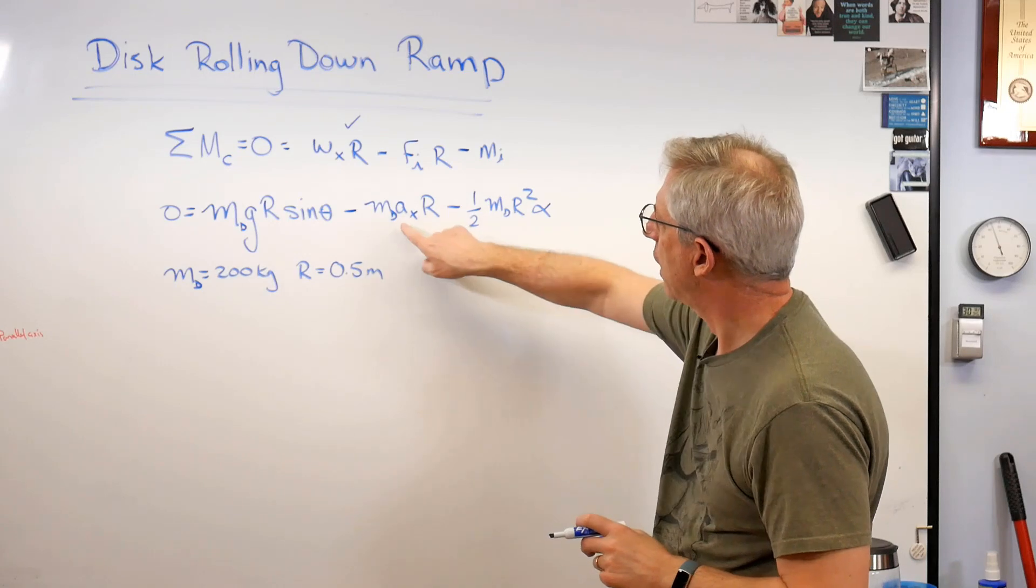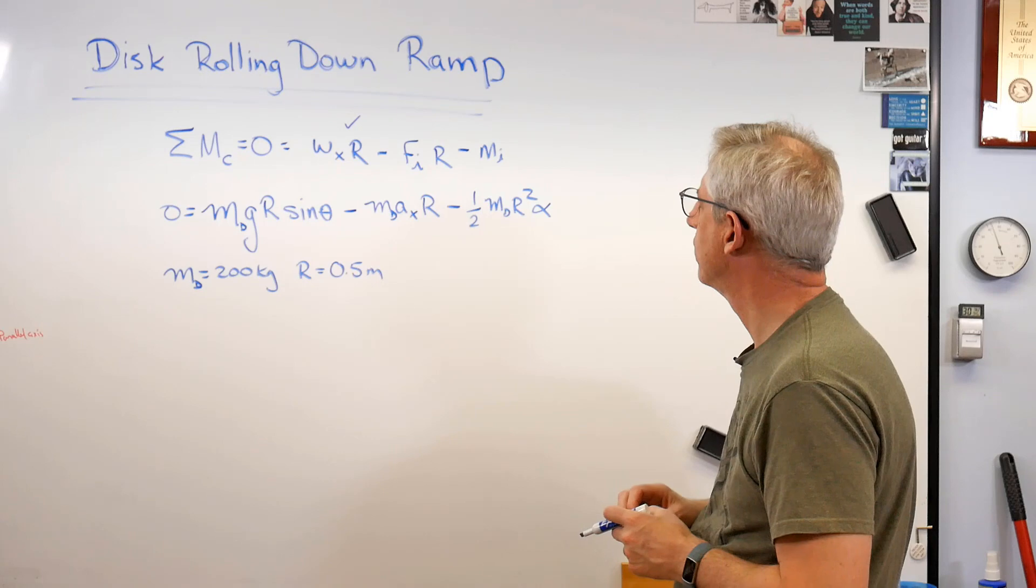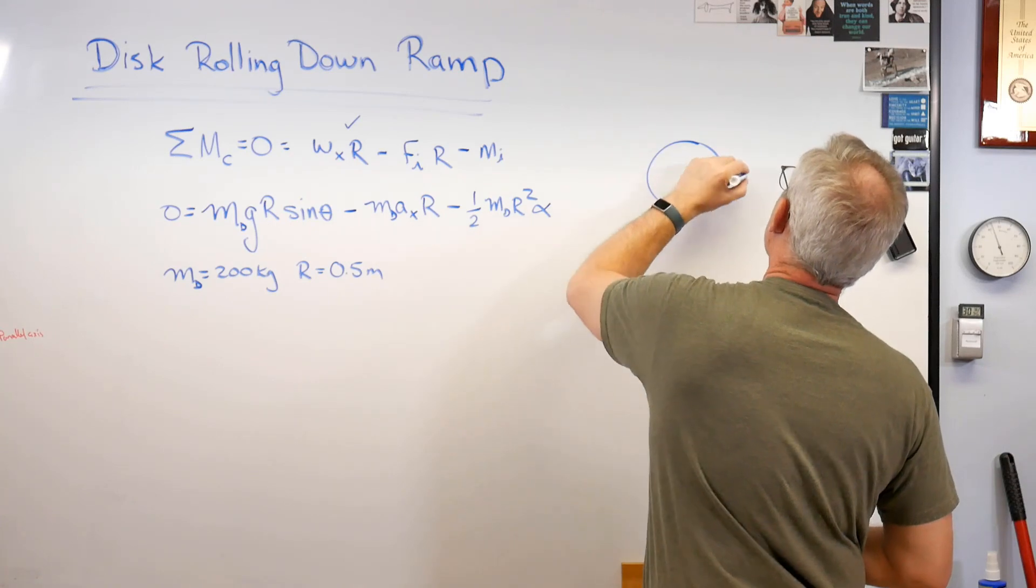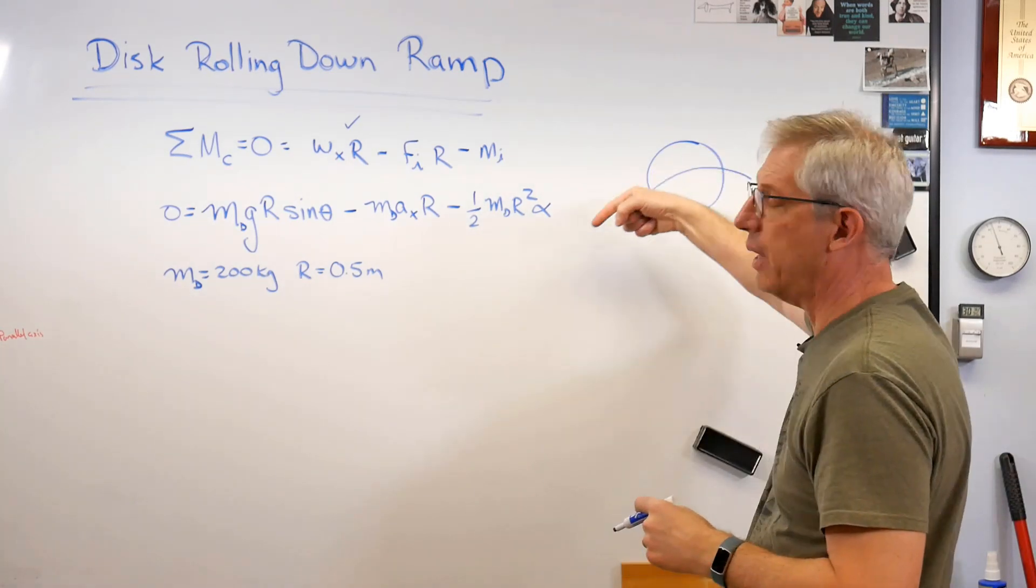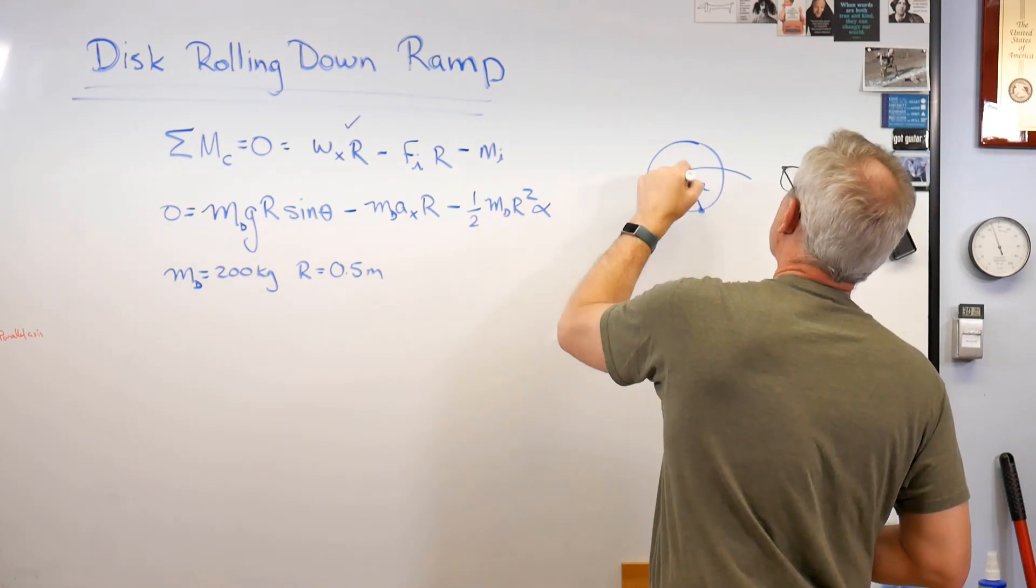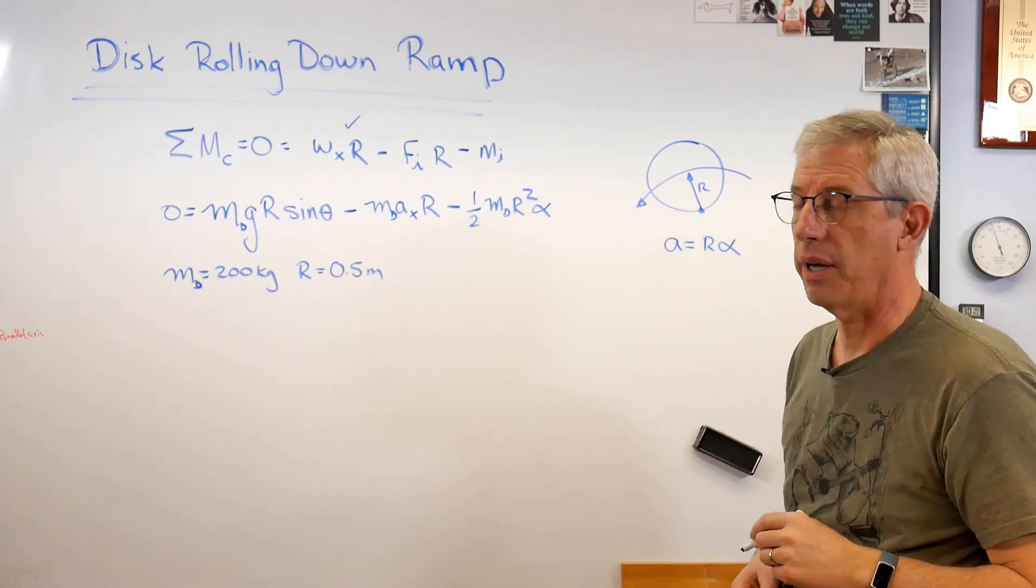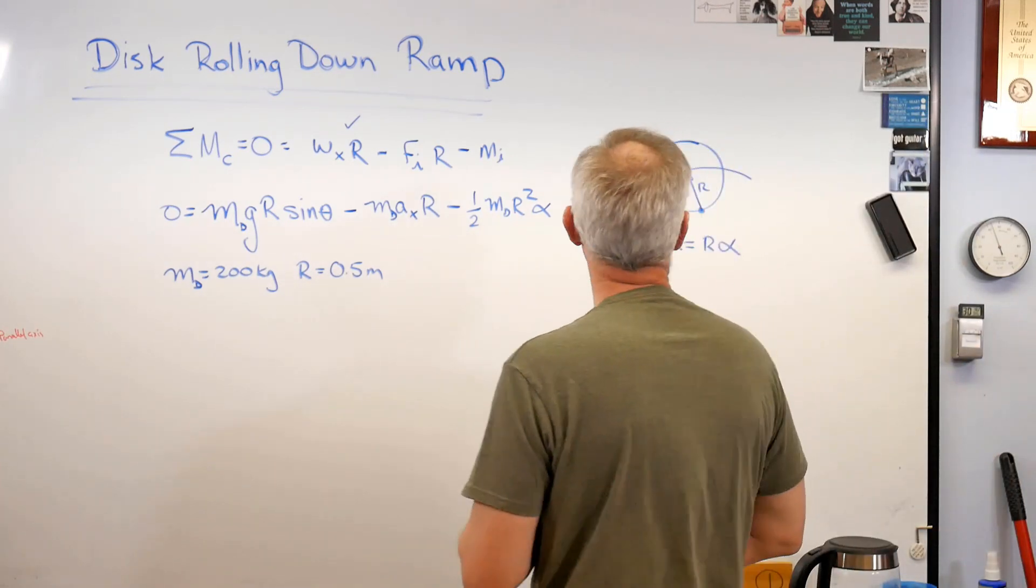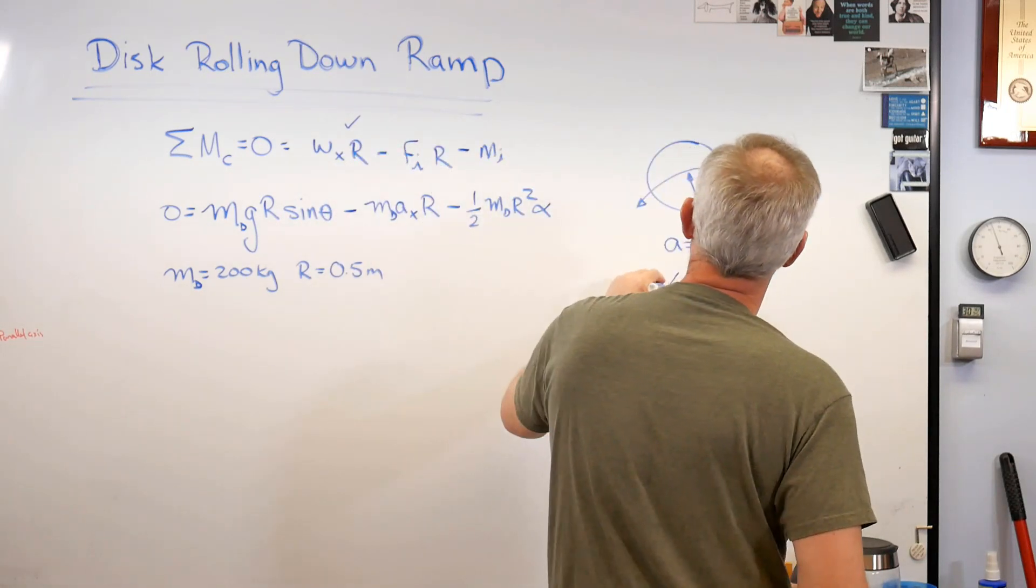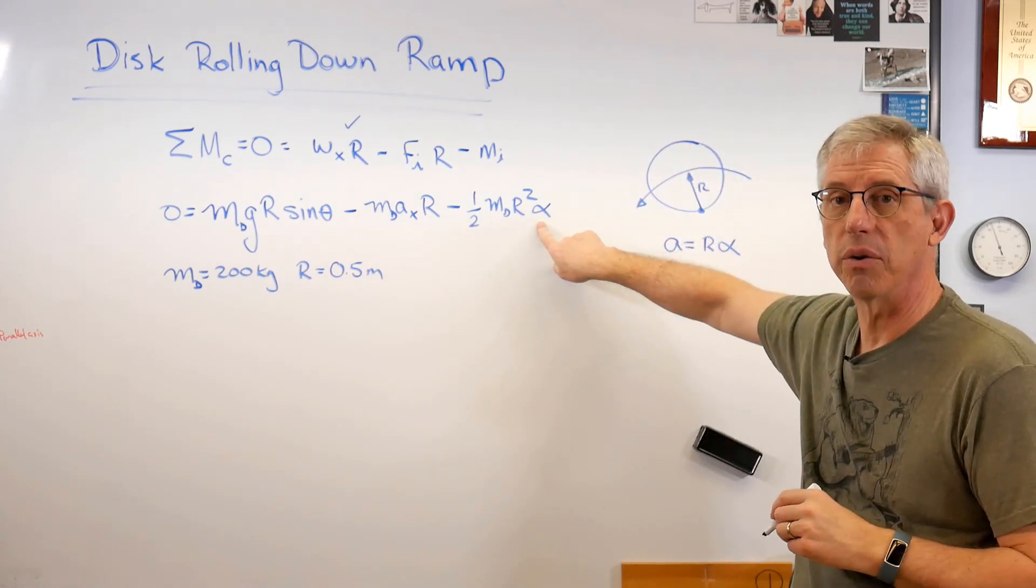Now I've got a problem here. I've got A there and alpha there. How am I going to do this? Well, for a disc that's rolling, that's the contact point and it's rolling that way. So it's moving, it's accelerating downwards, but it's also rotating. If that's R, that's the center of the disc, A equals R alpha. And that's just basic geometry here. So that means alpha equals A over R. Now in business, I'm going to replace that alpha with A over R.